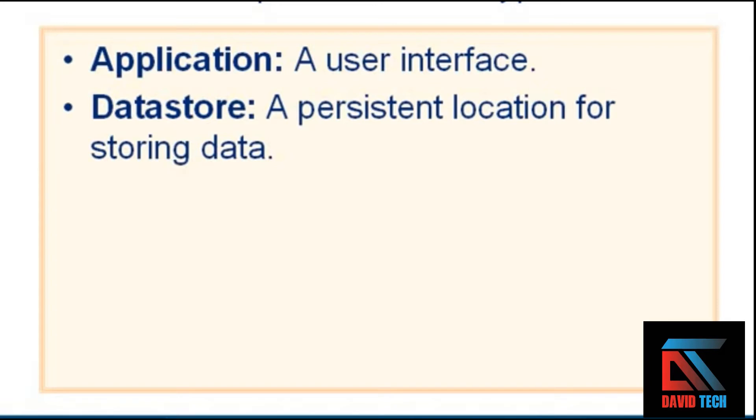The data store stereotype indicates a persistent location for storing data. The document stereotype is pretty self-explanatory. This could refer to an electronic or a printed document.